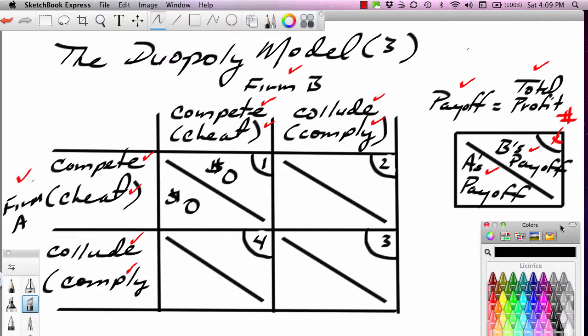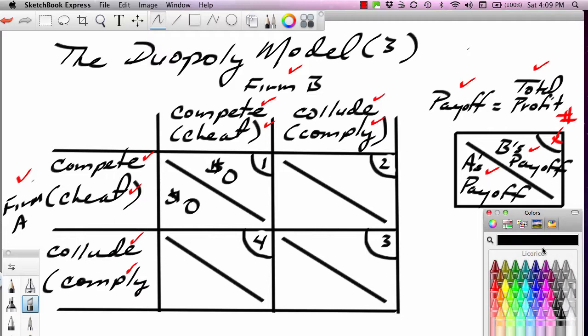Now, that gives an impetus or reason for collusion. So what we showed in video one, duopoly model video one, is that firms have an incentive to move from a competing position to a colluding position. When they move to collusion, their payoffs jump. And if you recall, in our example, each firm increased its profit by $12,000 by simply working together, fixing the price artificially high, restricting the output, and payoffs jump.